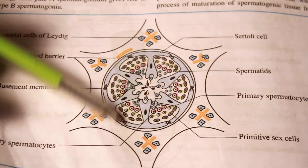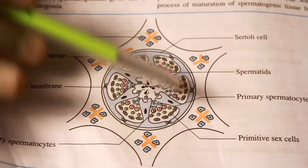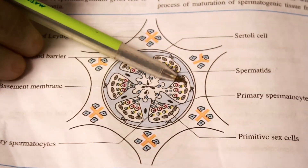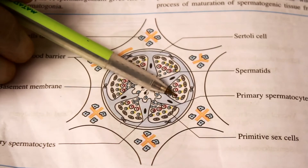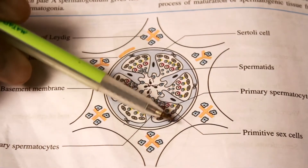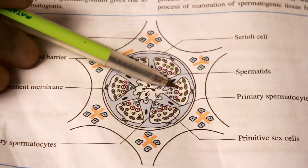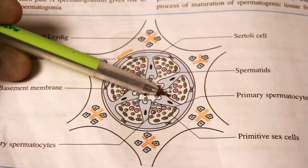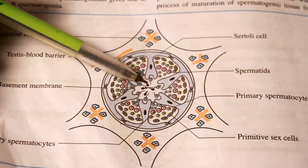In the inner portion of the seminiferous tubule it is lined by Sertoli cells connected by tight junctions forming the blood-testis barrier. The inner lining also contains spermatogenic cells in various stages of development. We can consider three layers: the outer layer consists of spermatogonia; the intermediate layer consists of primary spermatocytes; and the inner layer consists of spermatids. The lumen of the seminiferous tubule contains mature spermatozoa.